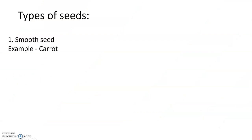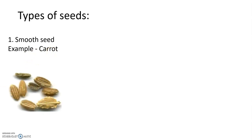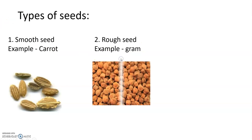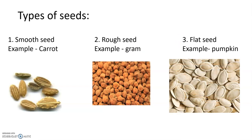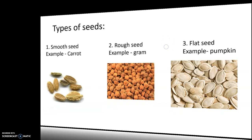Next are the types of seeds. The first type is smooth seed. An example of smooth seed is carrot — this is the picture of a carrot seed. The second type is rough seed; an example is gram. The third is flat seed; an example is pumpkin — this is the picture of pumpkin seeds.